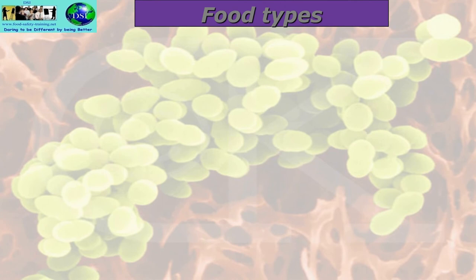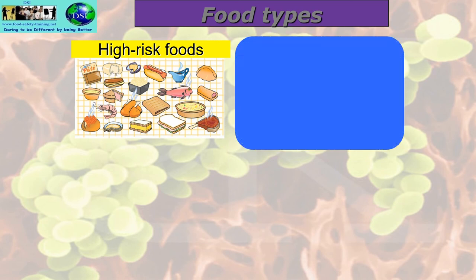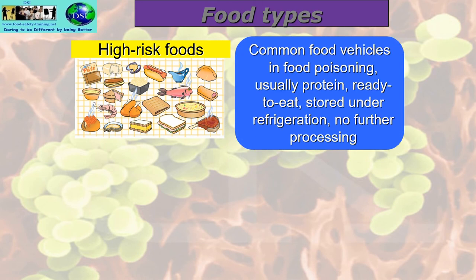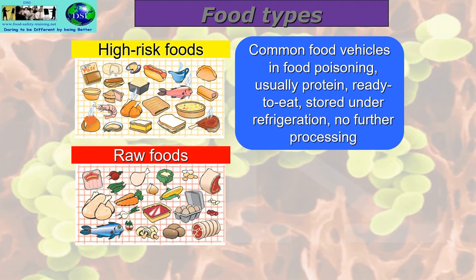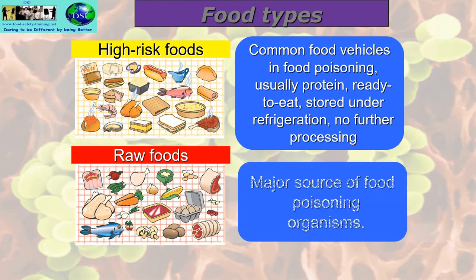High-risk foods are common vehicles in food poisoning. They are usually made of protein, ready to eat, stored under refrigeration, and require no further processing. These are the kinds of foods you'd find in a deli or supermarket fridge — cooked ham, cakes, cold prawns, pork pie, pâtés — anything containing protein that is usually kept in a fridge.